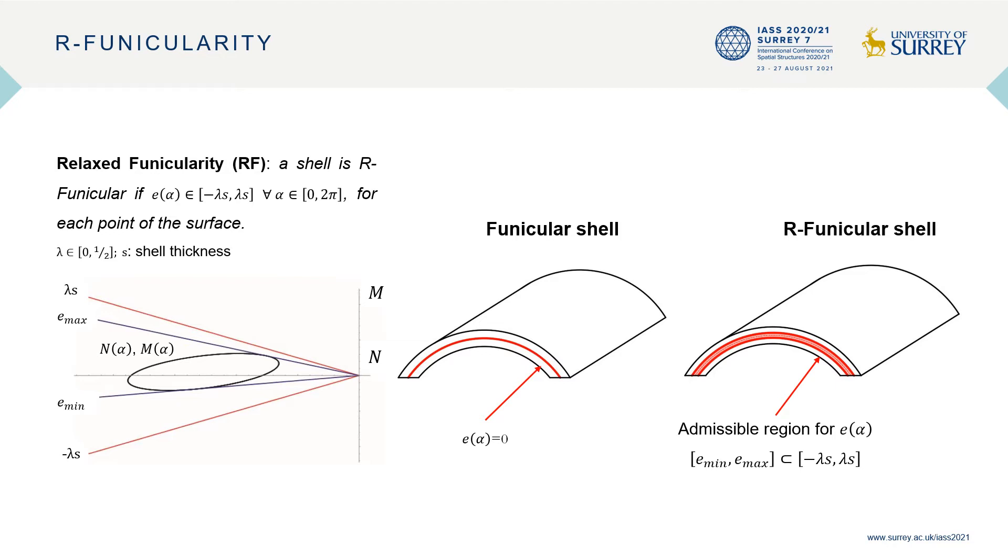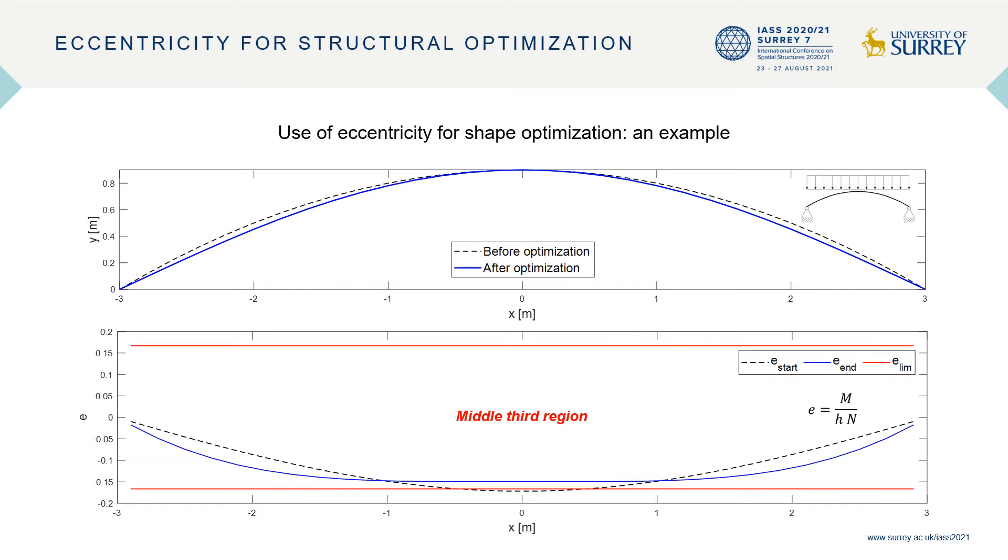The measure of generalized eccentricity has been used by some of the authors to define a relaxed form of funicularity. According to the relaxed funicularity definition, a shell is r-funicular if the eccentricity belongs to an admissible region that can be defined according to the middle third criterion when no-tension materials are used.